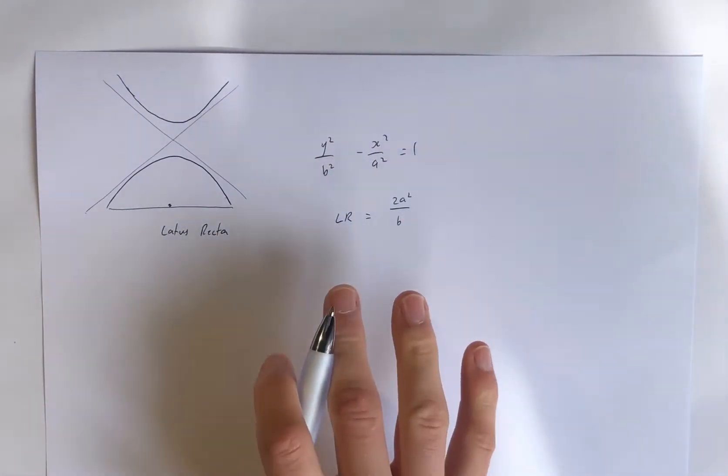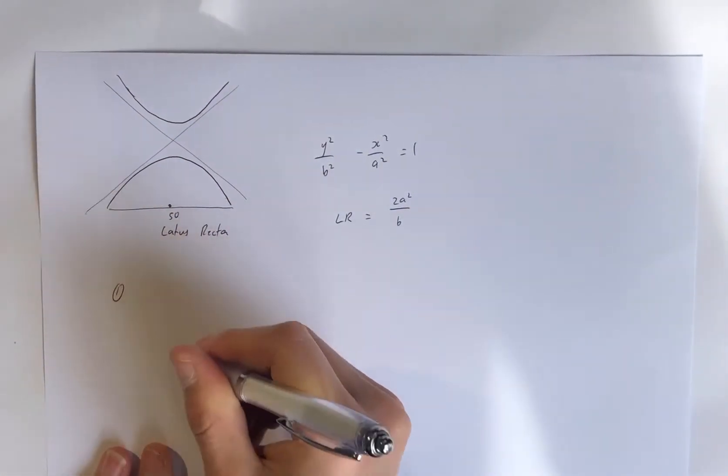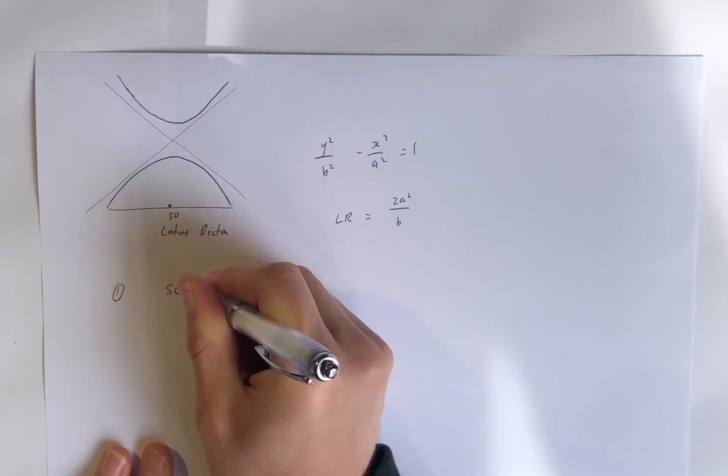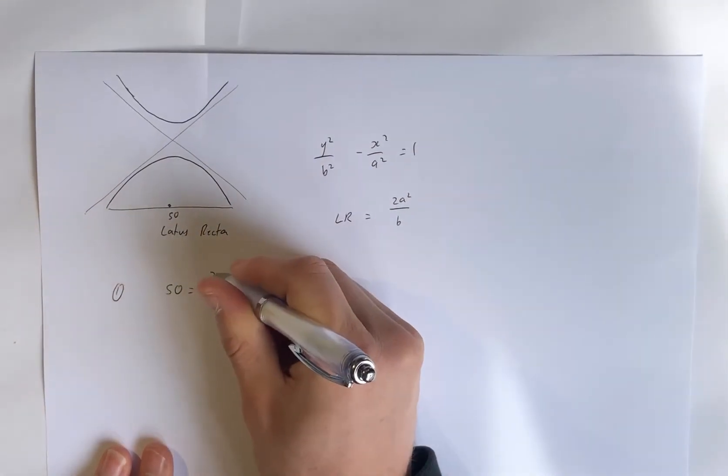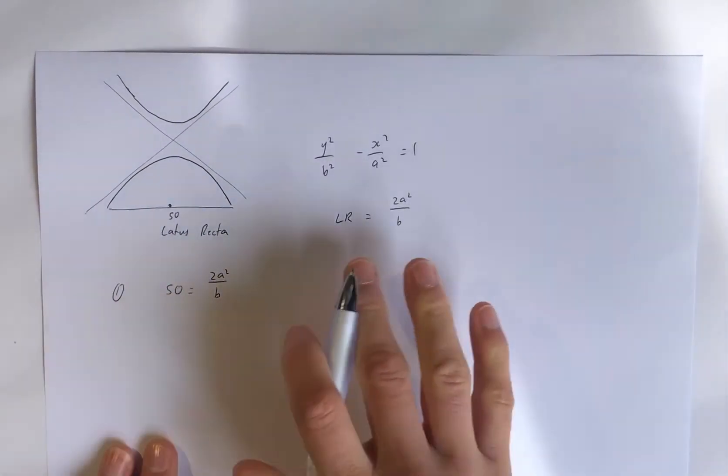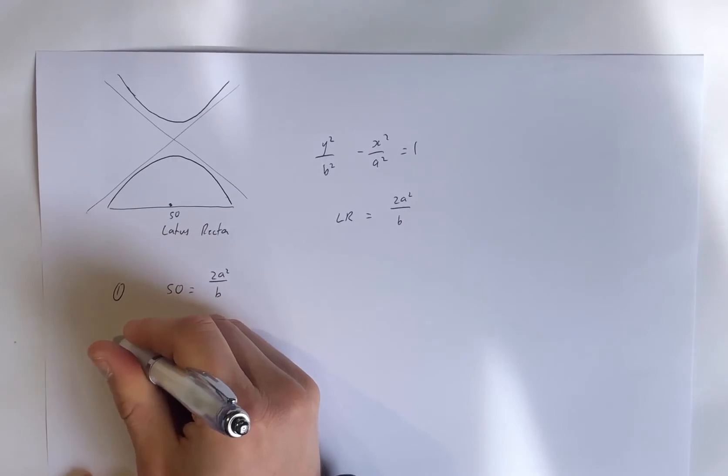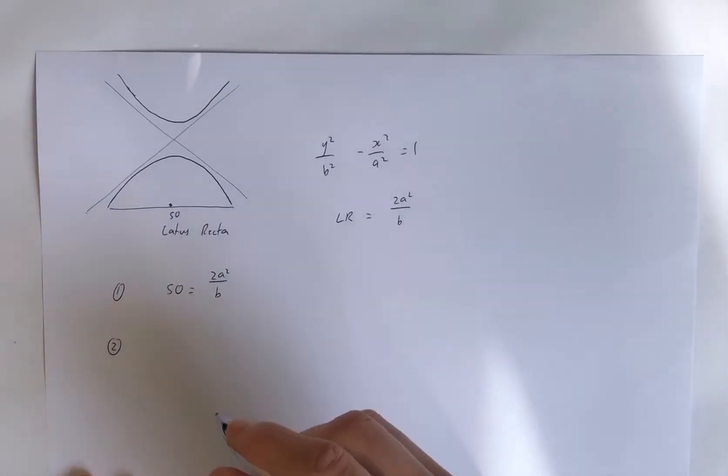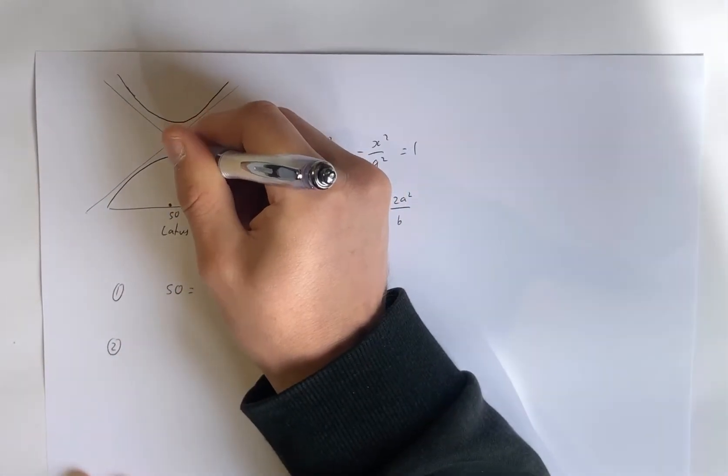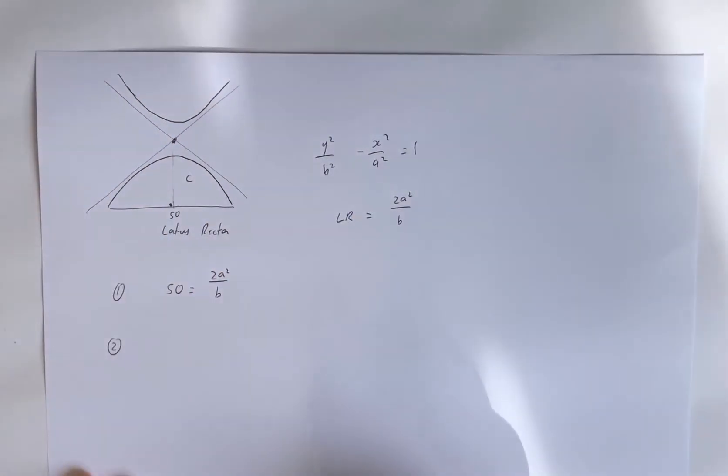So a hyperbola can also have a lattice recta. It has a width. So in this form, we have y squared over b squared minus x squared over a squared equals 1. And the lattice rectum, so the lattice recta length is actually equal to 2a squared over b. Right, so that's some information we can use. So we know that that's going to be 50. So equation 1, 50 is equal to the lattice rectum length, 2a squared over b.